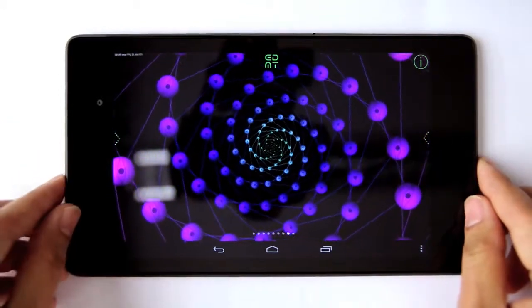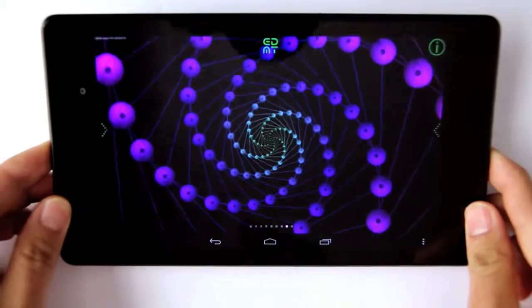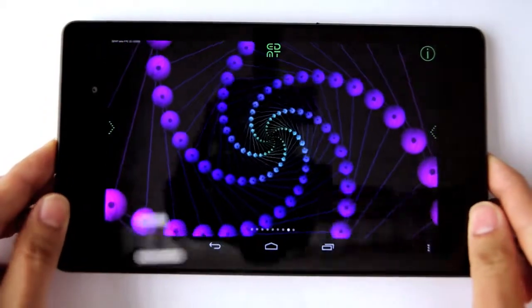And when you tilt your device, you can actually see that the spiral is rotating in three dimensions.